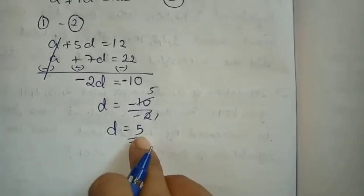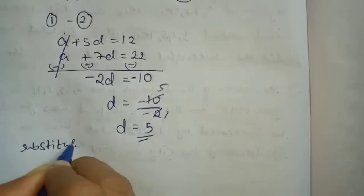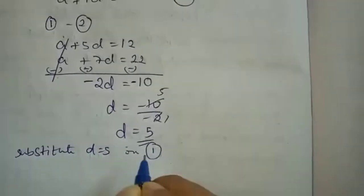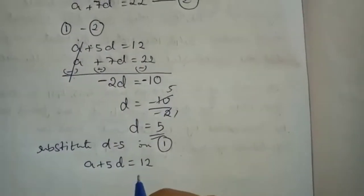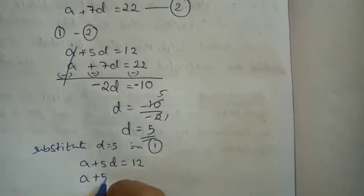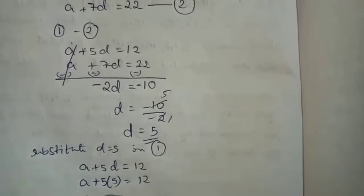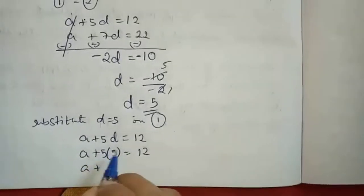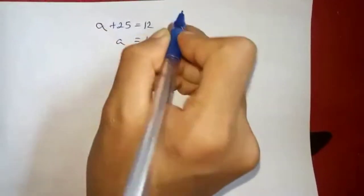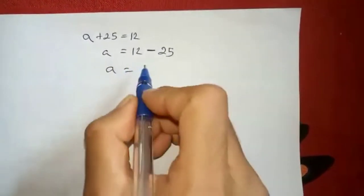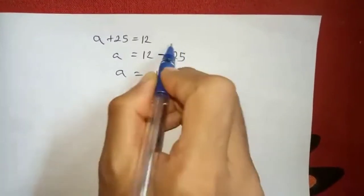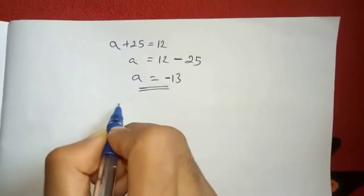Next we want A. So substitute D equals to 5 in equation 1. What is equation 1? A plus 5D equals to 12. Substitute D equals to 5 here: A plus 5 times 5 equals to 12. Here bracket means multiplication — 5 times 5 is 25 — so A plus 25 equals to 12. Take 25 to the other side, it becomes minus. A equals to 12 minus 25. Subtract: 25 minus 12 is 13, and the bigger number is 25, so minus 13. So A equals to minus 13. Now you got A equals to minus 13 and D equals to 5.